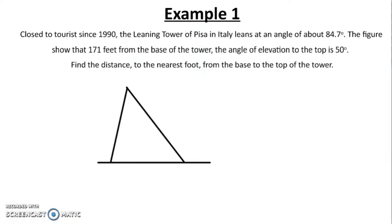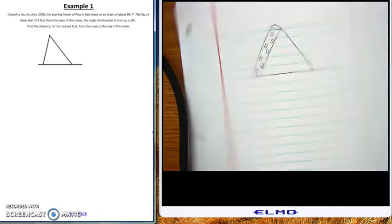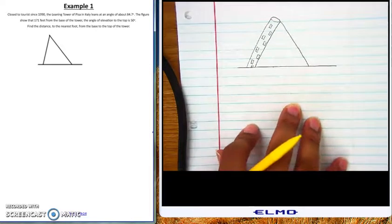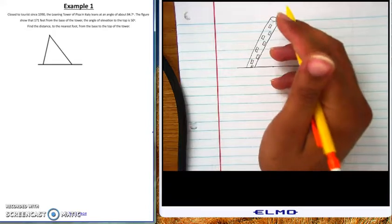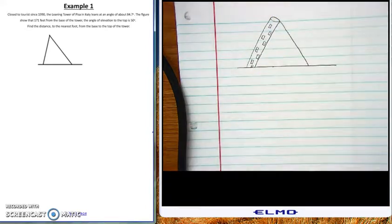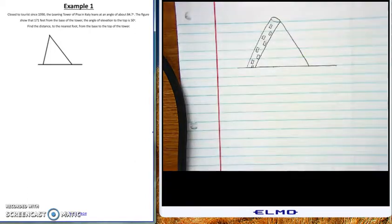For Example One, I want you to write this down and draw that triangle shape, then we'll fill everything in. Go ahead and stop the video and do that. Now we're going to keep moving forward. I'm going to move over to my Elmo so we're doing a dual screen. Here I have my Leaning Tower of Pisa — it has all these windows and it's leaning. If you've never been to it, it's a really cool thing to do in Italy.